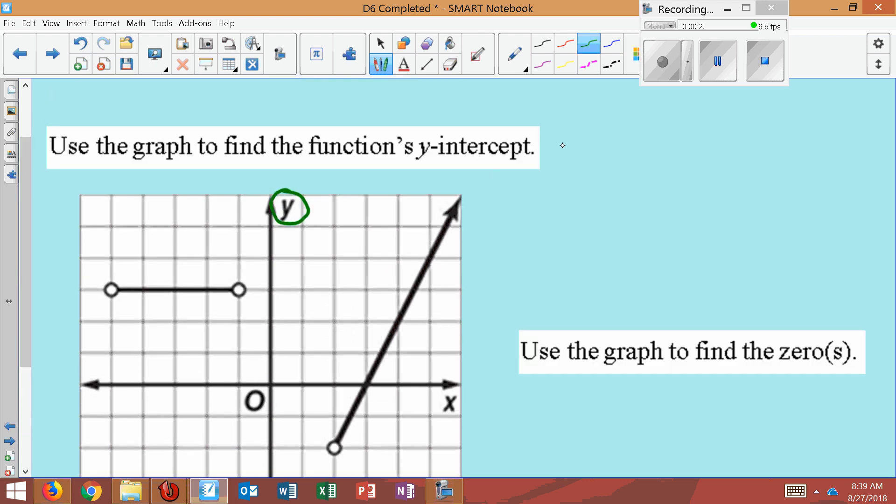So the y-intercept, if you want to list it as a coordinate point, would be 0, negative 4, because remember it's x then y in the alphabet, so we could list it that way. You could write the point this way, or you could say the y-intercept is at negative 4. The y-intercept is at negative 4.